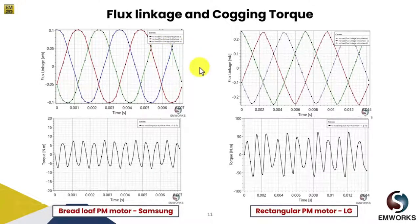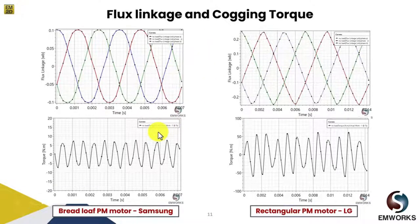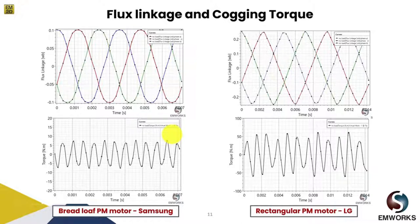At the same time, if we look at the rectangular PM motor design, it has more of a triangular waveform for coil flux linkage because of the rectangular shape of the magnet. And if we look at the cogging torque, the cogging torque for the Breidloff PM motor is lesser compared to the rectangular PM motor design. The cogging torque values are high here because we haven't skewed our geometry.